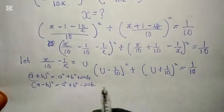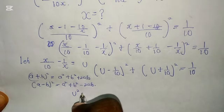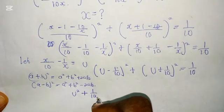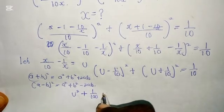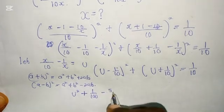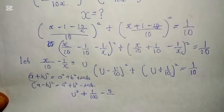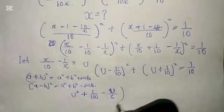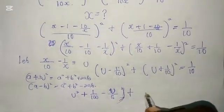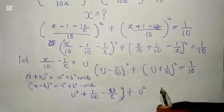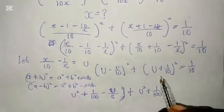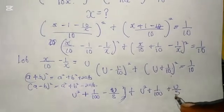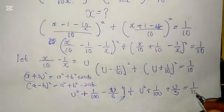So using these two properties, starting with the first term we have u squared plus 1 over 100, and when you multiply the two together we are going to have minus u over 5. Then using the second property, we have u squared plus 1 over 100, and 2 times u times 1 over 10 gives us plus u over 5. And everything equals 1 over 10.